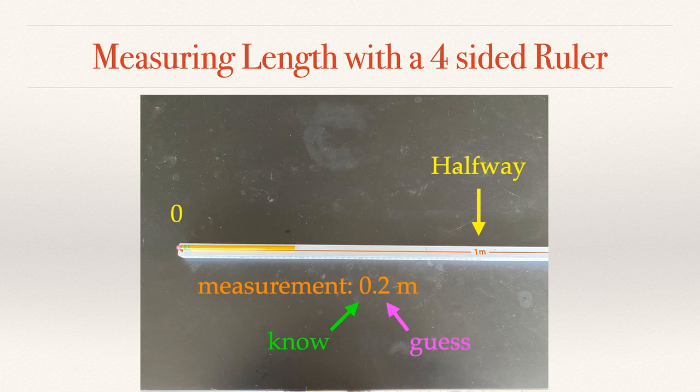So in terms of what we know, we know that our pencil here is more than zero meters long, but it's less than one. So that's how we know that first zero value.